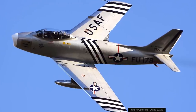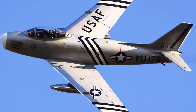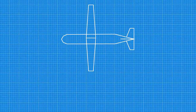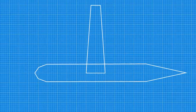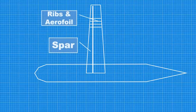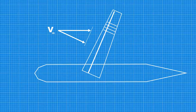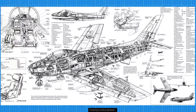Luckily, there is a way out for the designer: sweeping back the wing. The aerofoil of a swept wing, being at an angle with the flow, feels only the flow component perpendicular to the wingspan. The flow around the wing is now very different from the flow around the aerofoil, and the flow component interesting the aerofoil has a speed lower than the overall speed, hence delaying the formation of shocks. If the shock formation is delayed, the drag rises more gently with speed. Also, the shocks are not as strong as they are on a straight wing, reducing the wave drag.